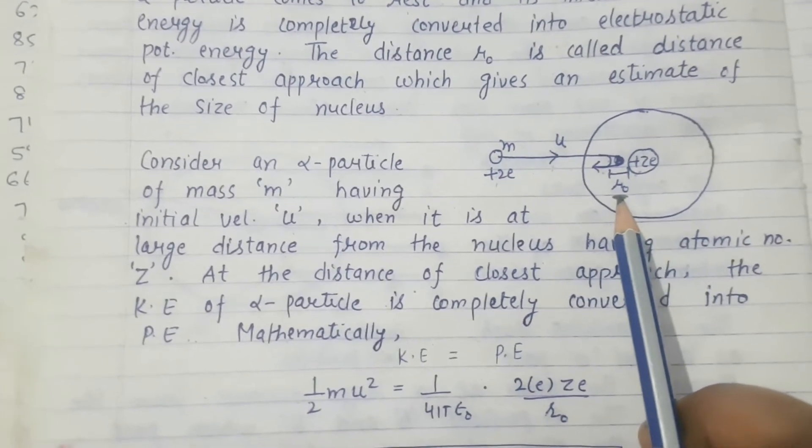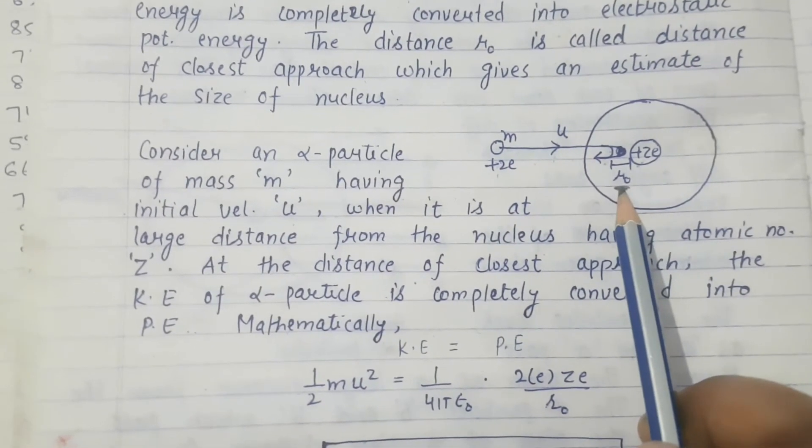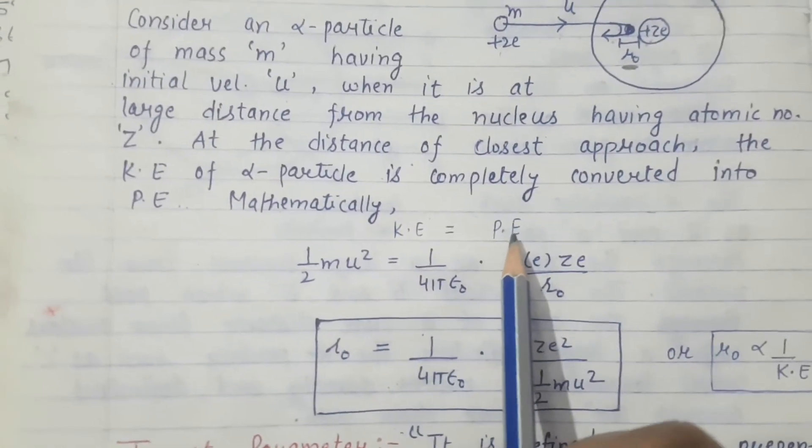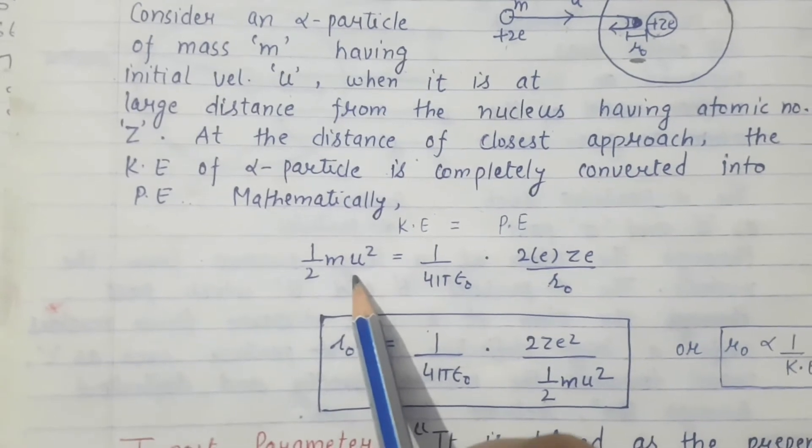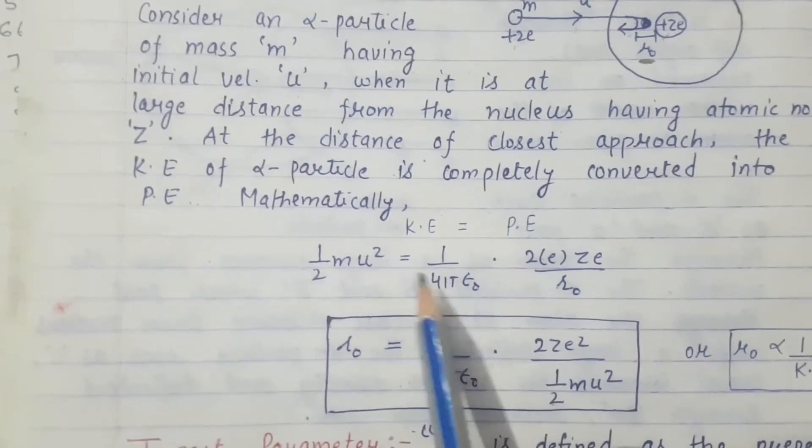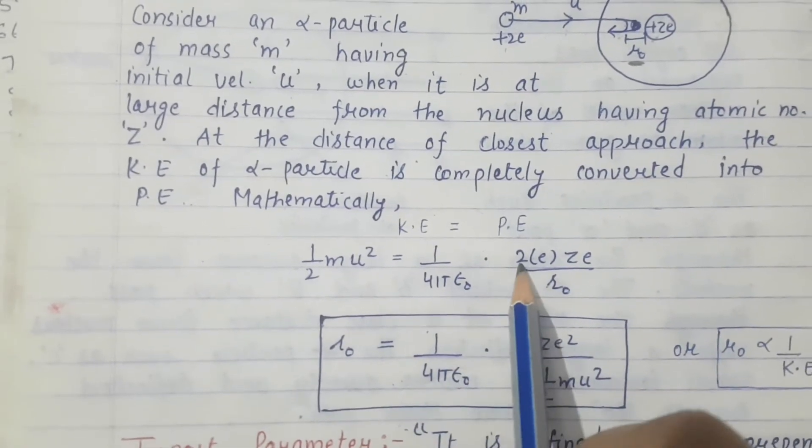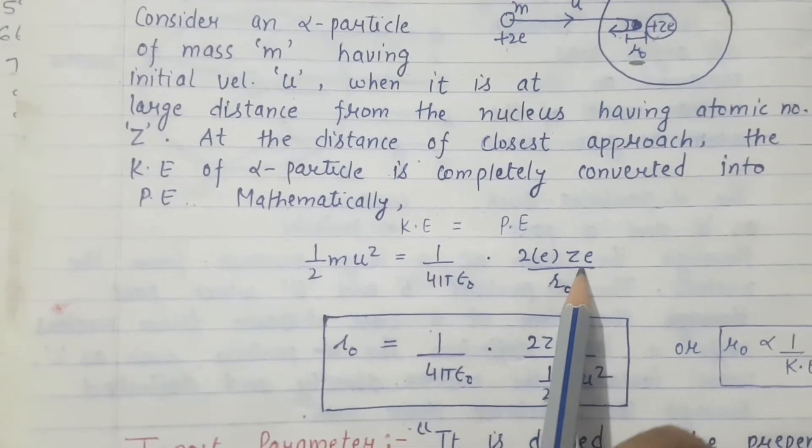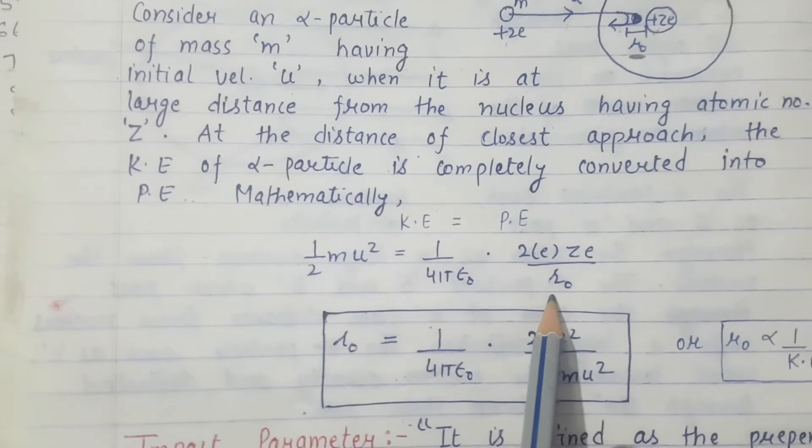Mathematically, kinetic energy equals the potential energy. The formula: one half mu square equals 2e, the charge of the alpha particle, and nucleus having charge ZE, divided by the distance r naught.